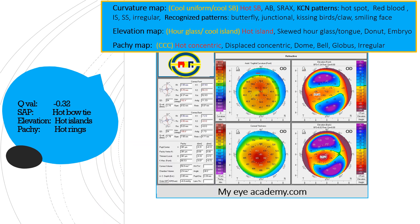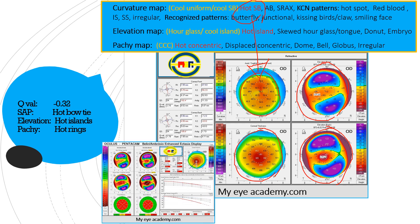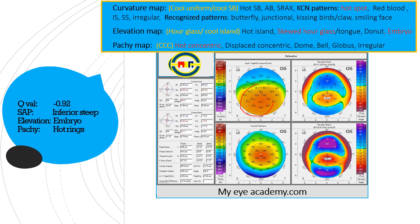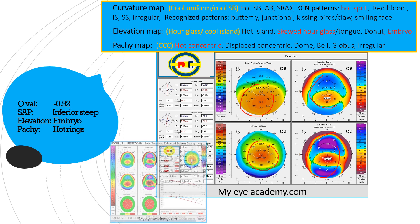Now remember, this time it is not a cool bow tie — it is a hot symmetrical bow tie. It is symmetrical but not cool; it's hot. So a hot symmetrical bow tie is indicative of an abnormal cornea. The elevation map shows an embryo shape, the anterior elevation shows a hot eye lens, and there are hot concentric rings. All indicative of keratoconus, confirmed by the indices. Here there is an inferior steep, hot concentric rings, and embryo-shaped or tongue-shaped patterns on both elevation maps — all suggestive of keratoconus.